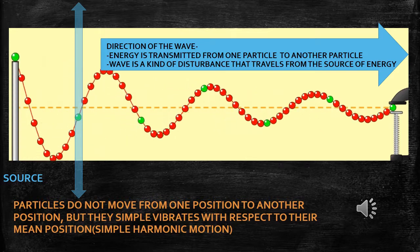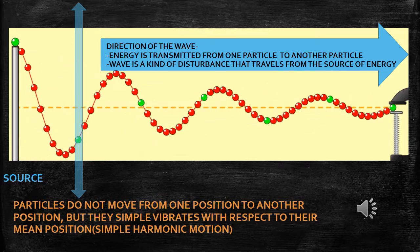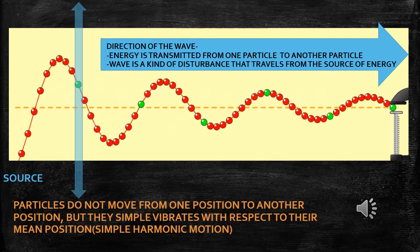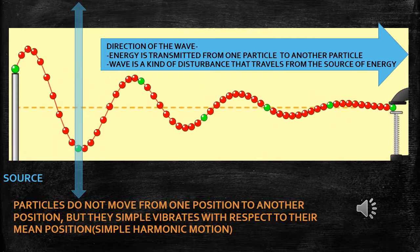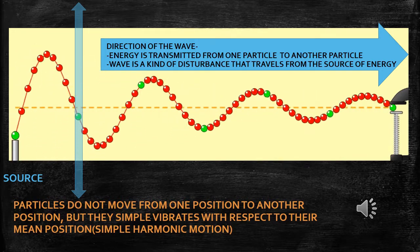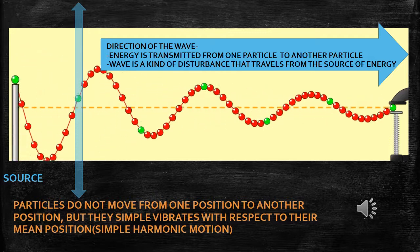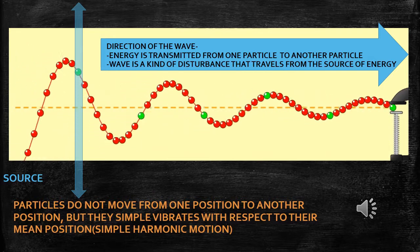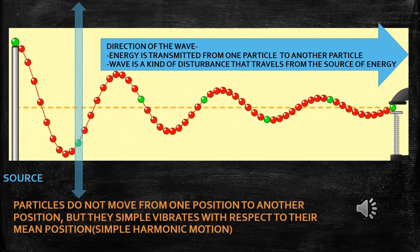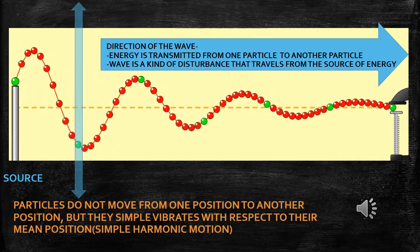So finally, after observing the animation, we can define a wave. The disturbance which carries energy and momentum from one point in space to another point in space, without the transfer of the medium — that is, without displacing particles — is known as a wave.